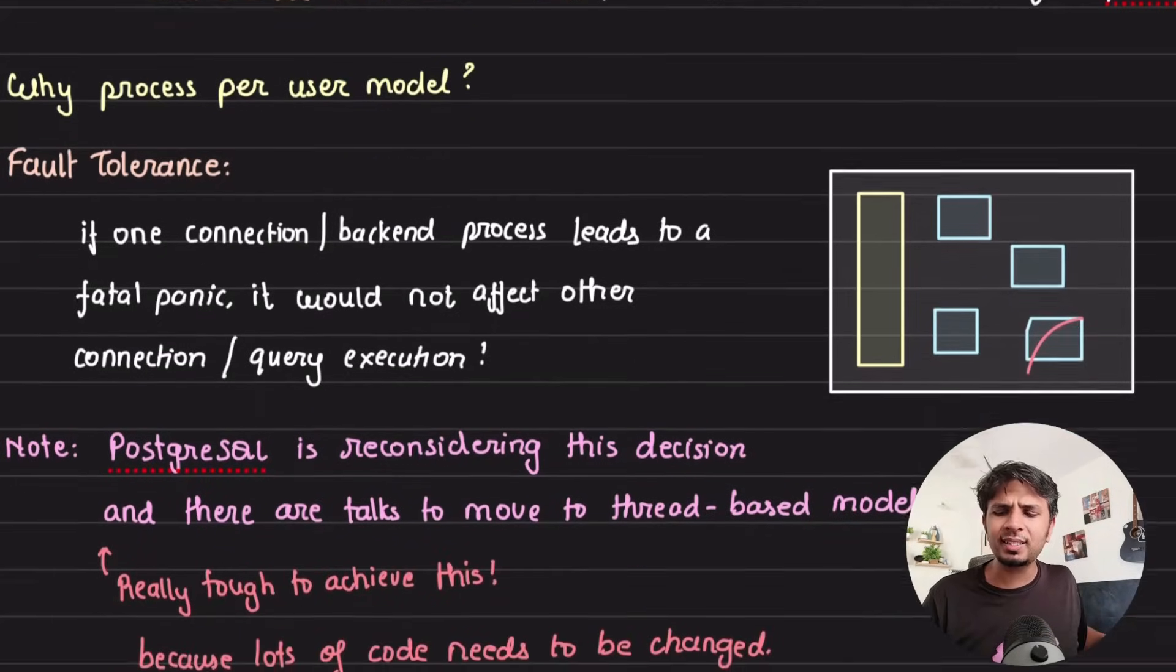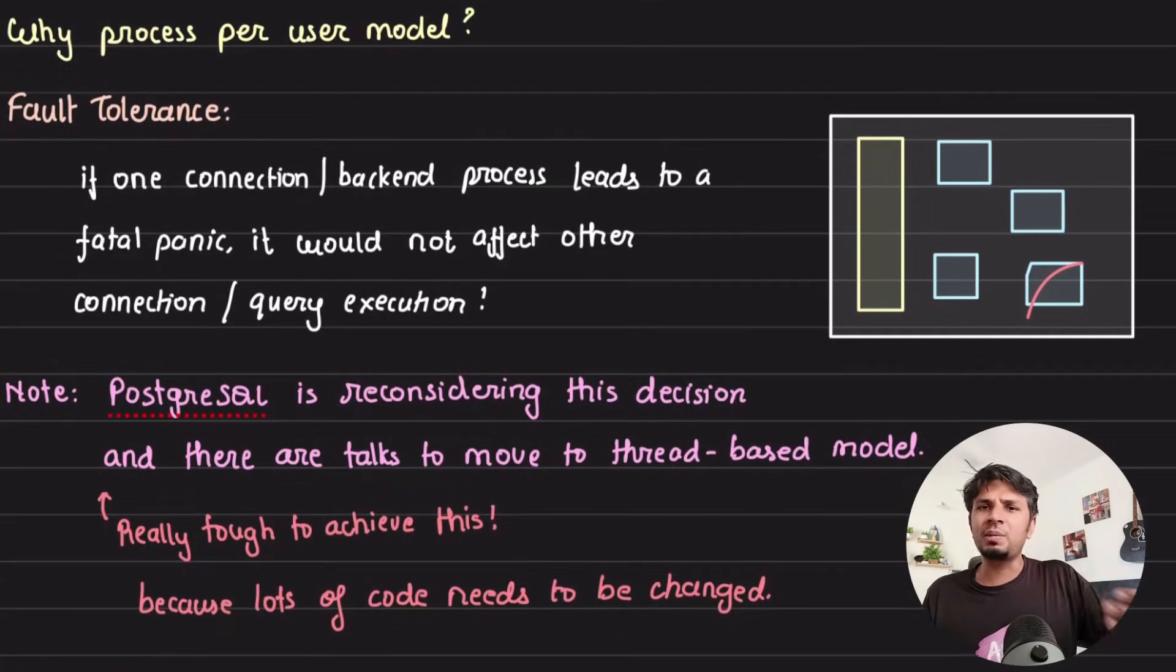But by the way, Postgres is reconsidering the decision to move to a thread-based model. There is a massive proposal for that, but again, it's really tough to do it because a lot of code needs to be changed. But yeah, this is how Postgres does its connection management. We went to the source code, we picked a bit of source code to understand where exactly the fork is happening, how it is happening, and we are sure that whatever we read in the documentation is exactly how it is being done. And yeah, this is all what I wanted to cover in this one. I hope you found it interesting, hope you found it amusing. That's it for this one. I'll see you in the next one. Thanks a lot.